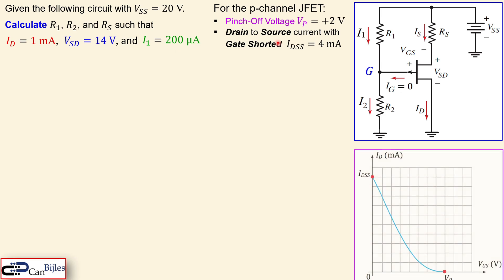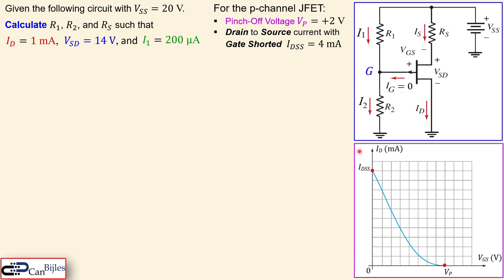Let's look at the current-voltage characteristics of this P-channel JFET. The pinch-off voltage is +2 V and IDSS is 4 mA — these are the two boundary conditions. The transfer characteristic curve between these boundaries is described by a square-law expression, which we will use shortly.